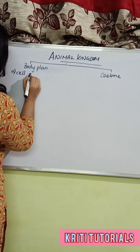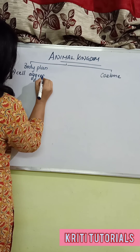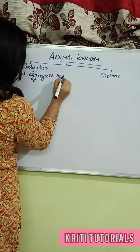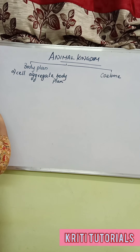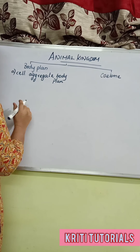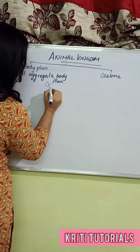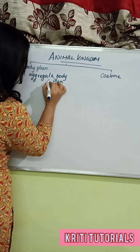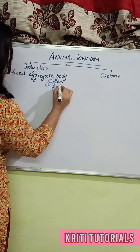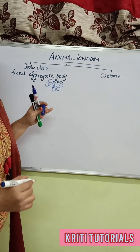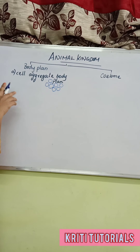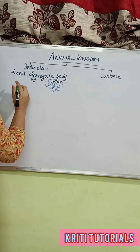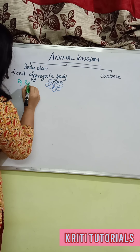The first type is the cell aggregate body plan. This corresponds to the cellular level of organization, where the cells are loosely aggregated and each cell has its own roles and responsibilities. The example of cell aggregate body plan is sponges.